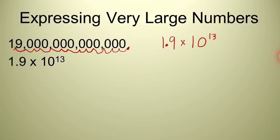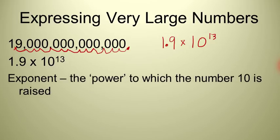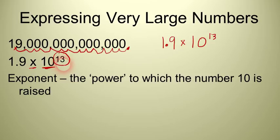That's how you express this number in scientific notation. Nineteen trillion would be written as 1.9 times 10 to the thirteenth. We don't have all those zeros running together, so scientific notation is a lot easier to type into a calculator or to read. We have two parts of this scientific notation number. The first is called the exponent — in this case, our exponent is thirteen. That's the power to which the number ten is raised. The exponent can change depending upon how many places you have to move that decimal point.